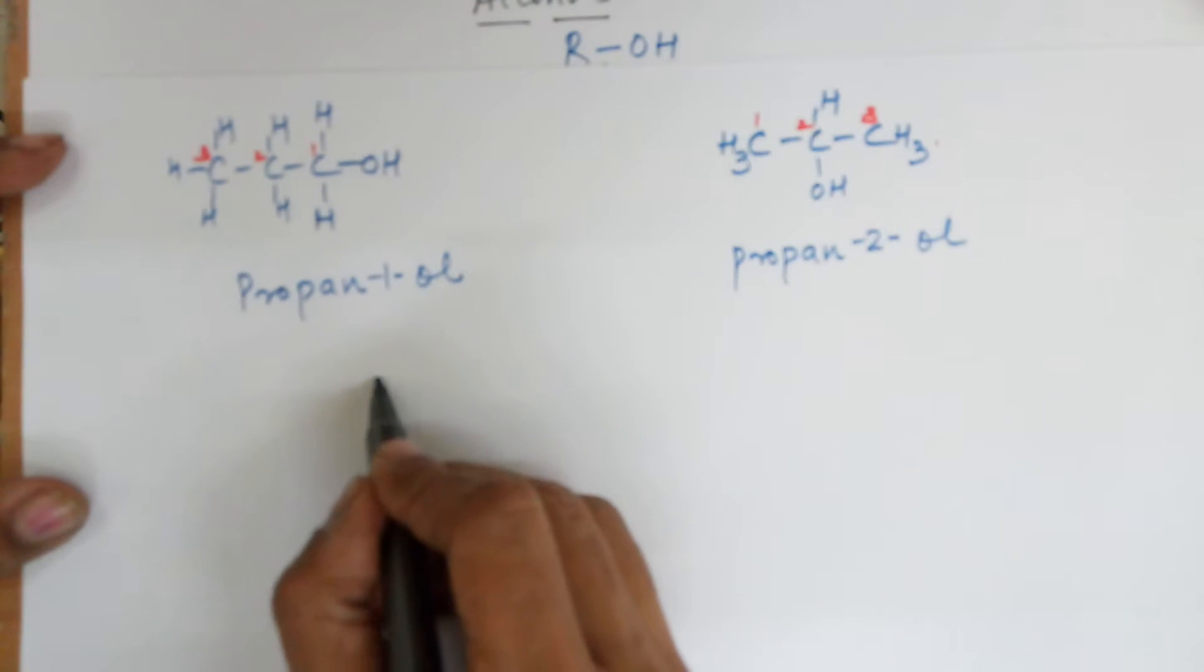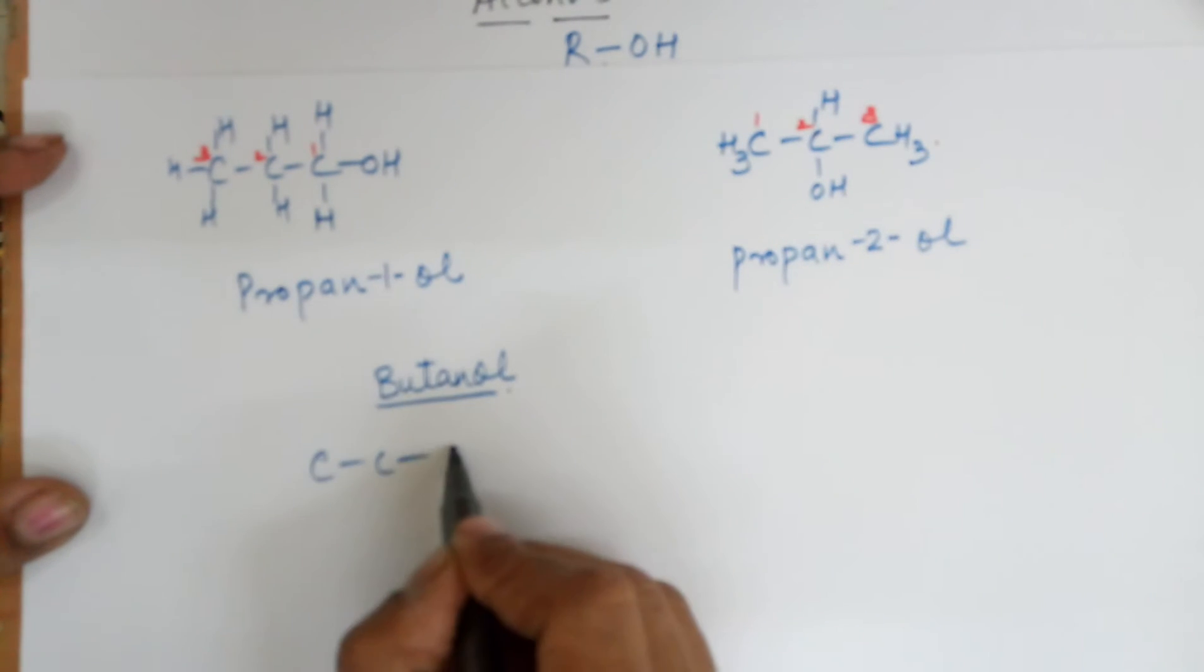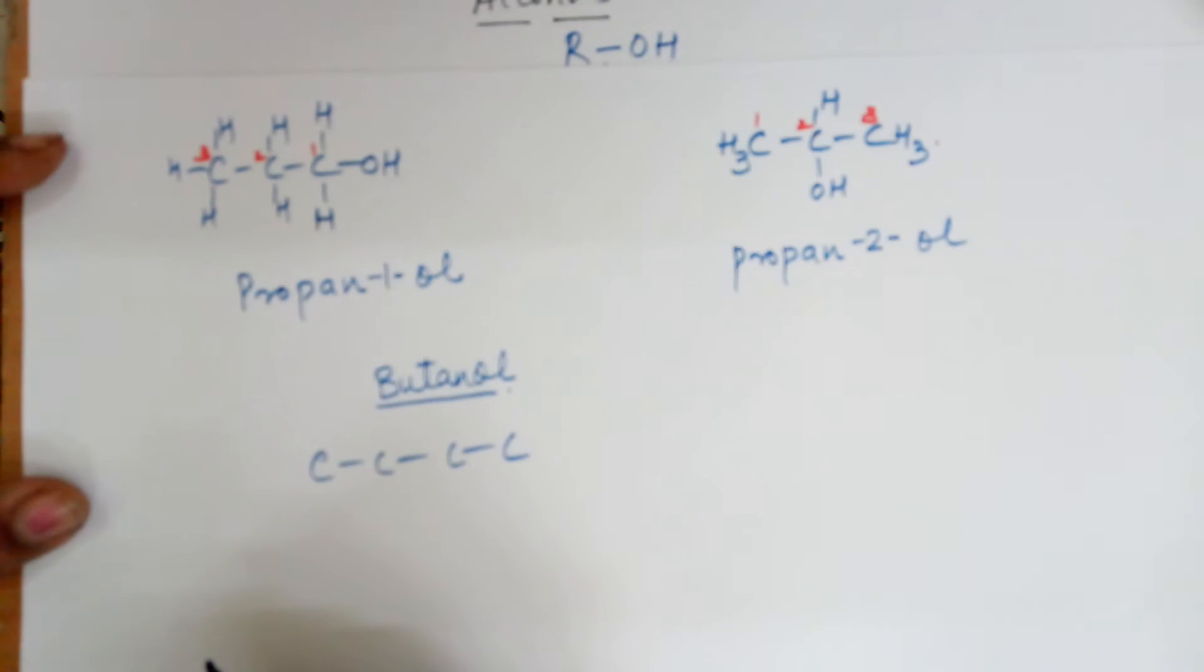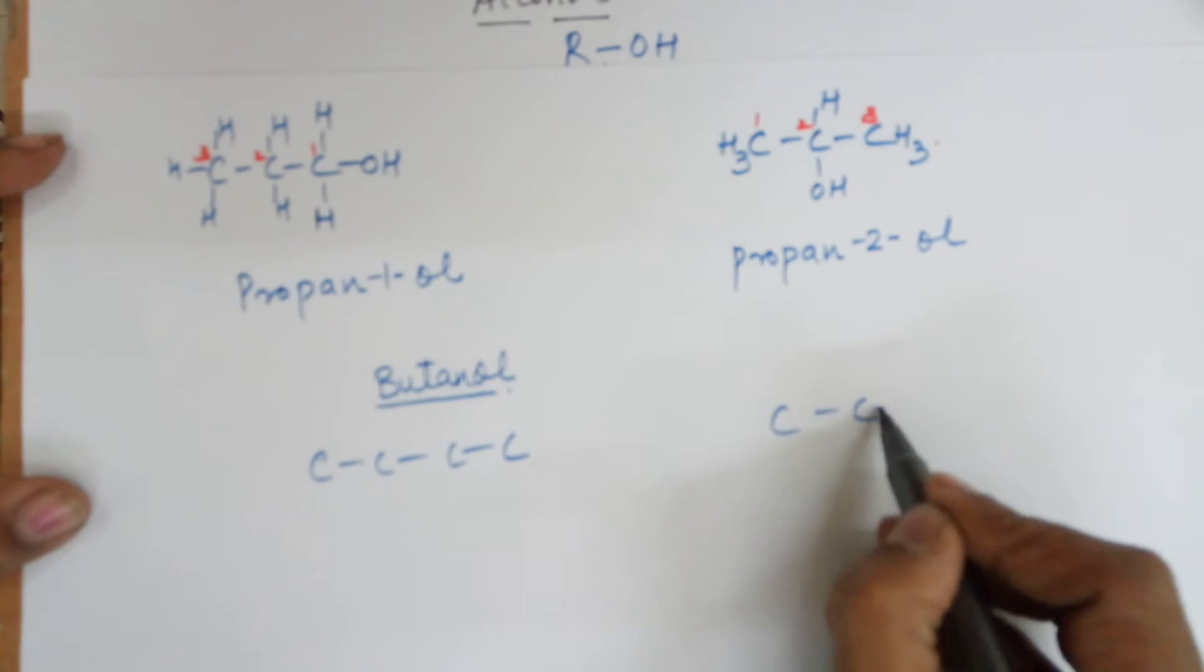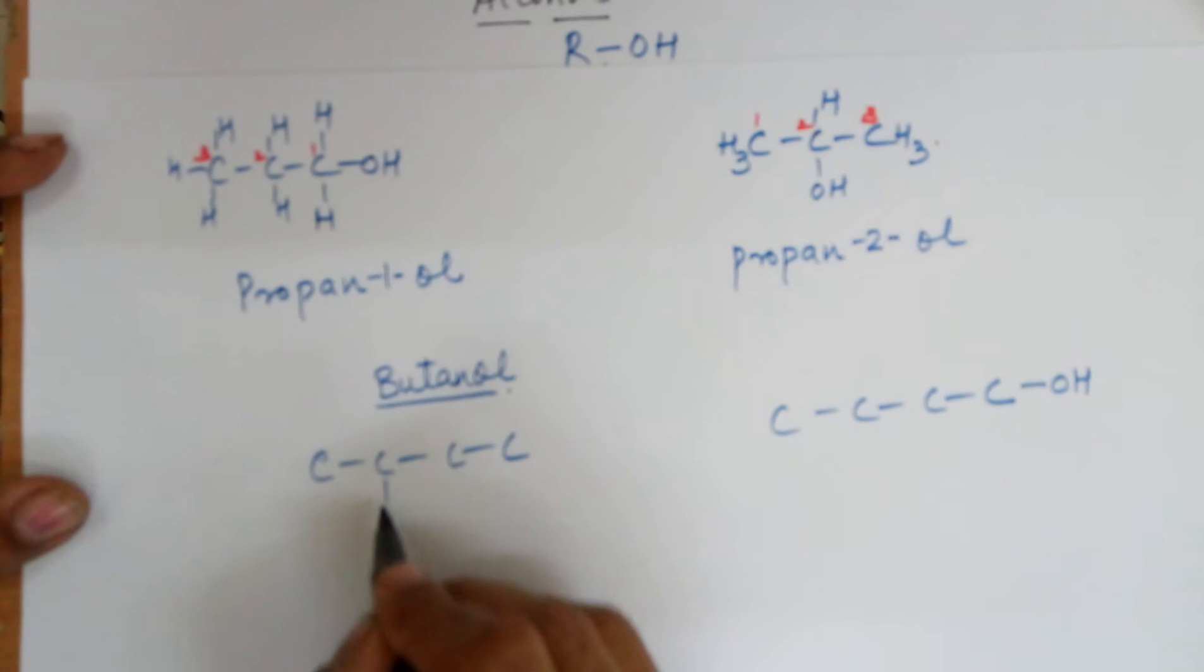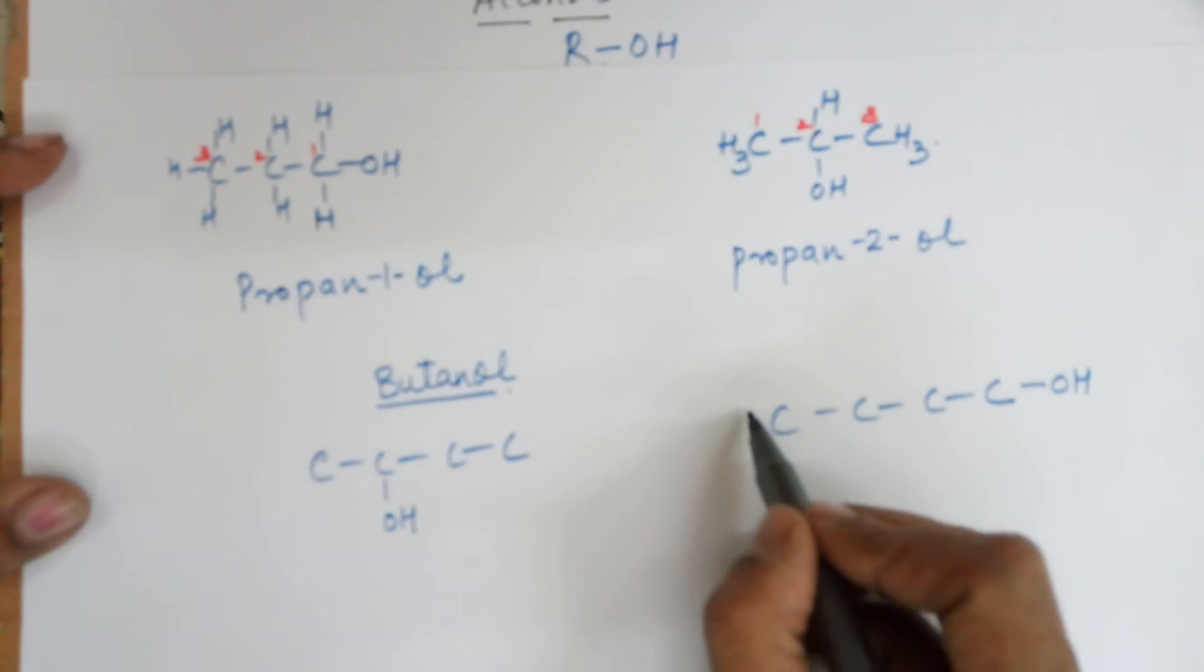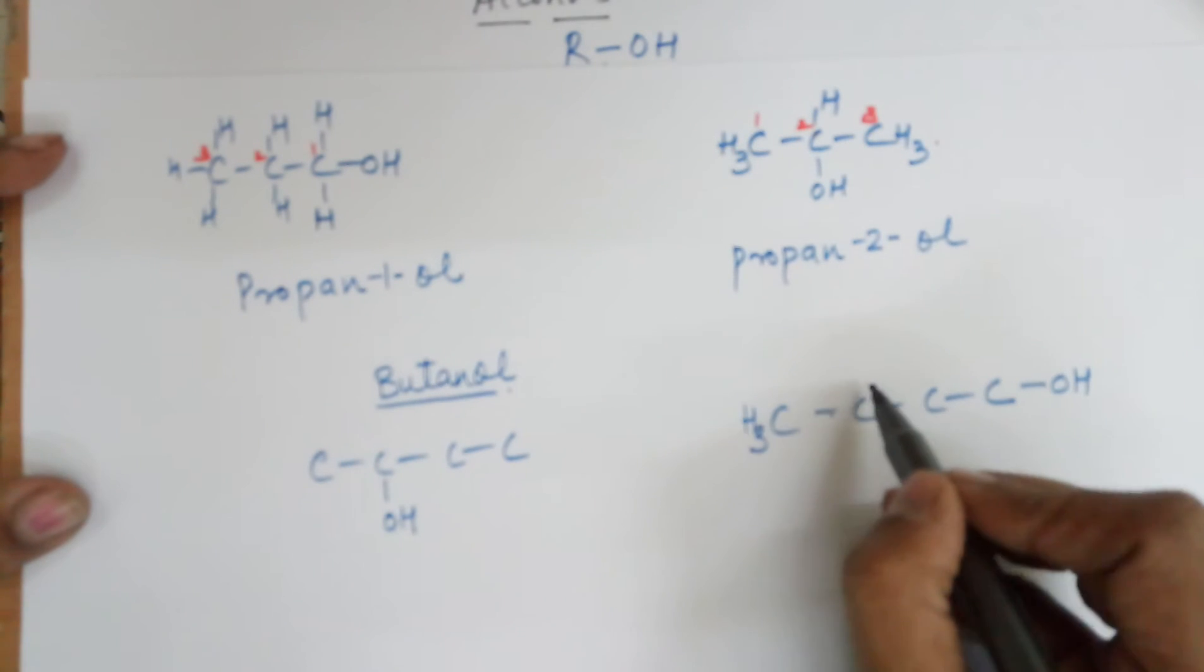The last example is that of butanol. I have got four carbons, and out of these four I have to substitute one of the hydrogens by an OH group. In the first case I am putting the OH on extreme right, the first carbon. In this case I am putting the OH here. Let me complete the structure: one bond, so three hydrogens more, two bonds, two hydrogens more, two bonds, two hydrogens more, two bonds, two hydrogens more.